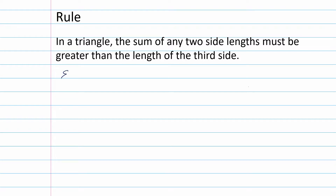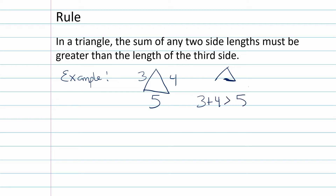If we had a triangle with sides 3, 4, and 5, will it make a triangle? Or will the sides not be long enough to reach the other point? Is 3 plus 4 greater than 5? Yes. Is 4 plus 5 greater than 3? Yes. Is 5 plus 3 greater than 4? Yes. So as long as all those sides add up and are greater than the other side, we have a possible triangle.